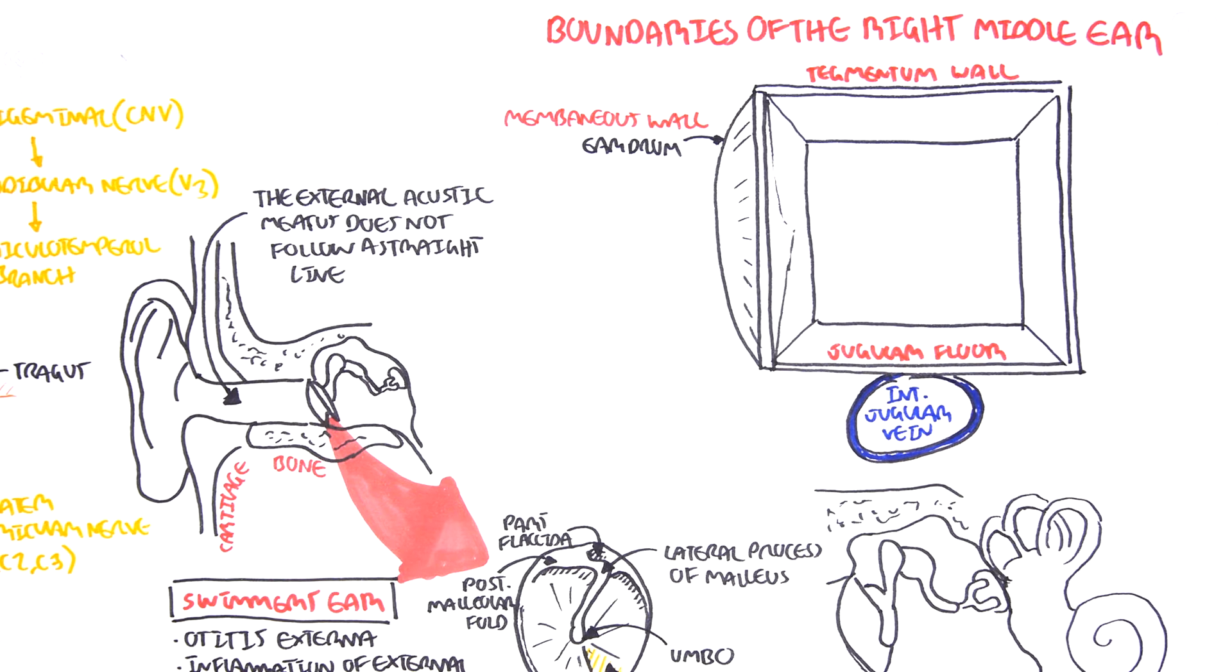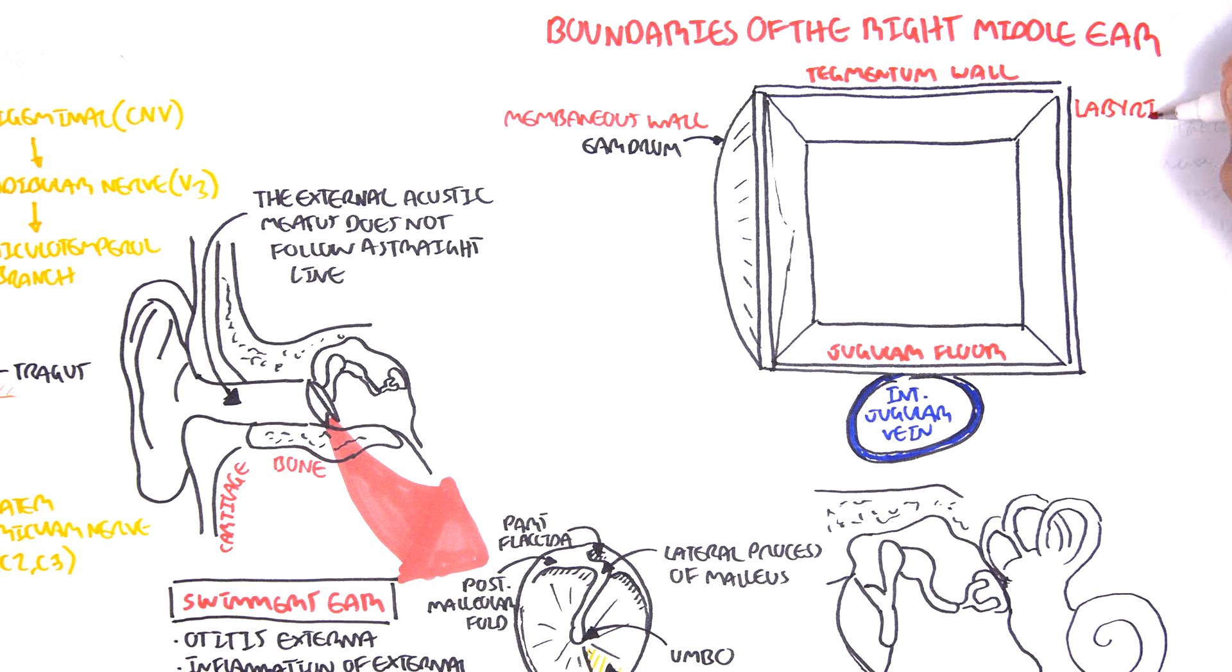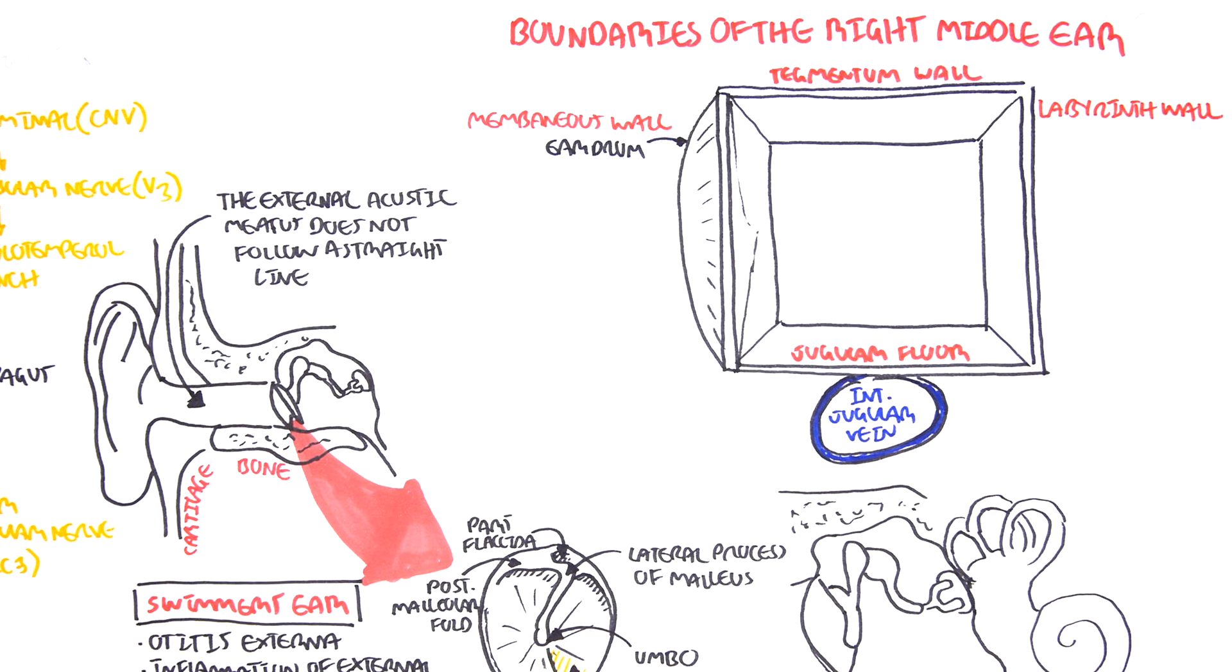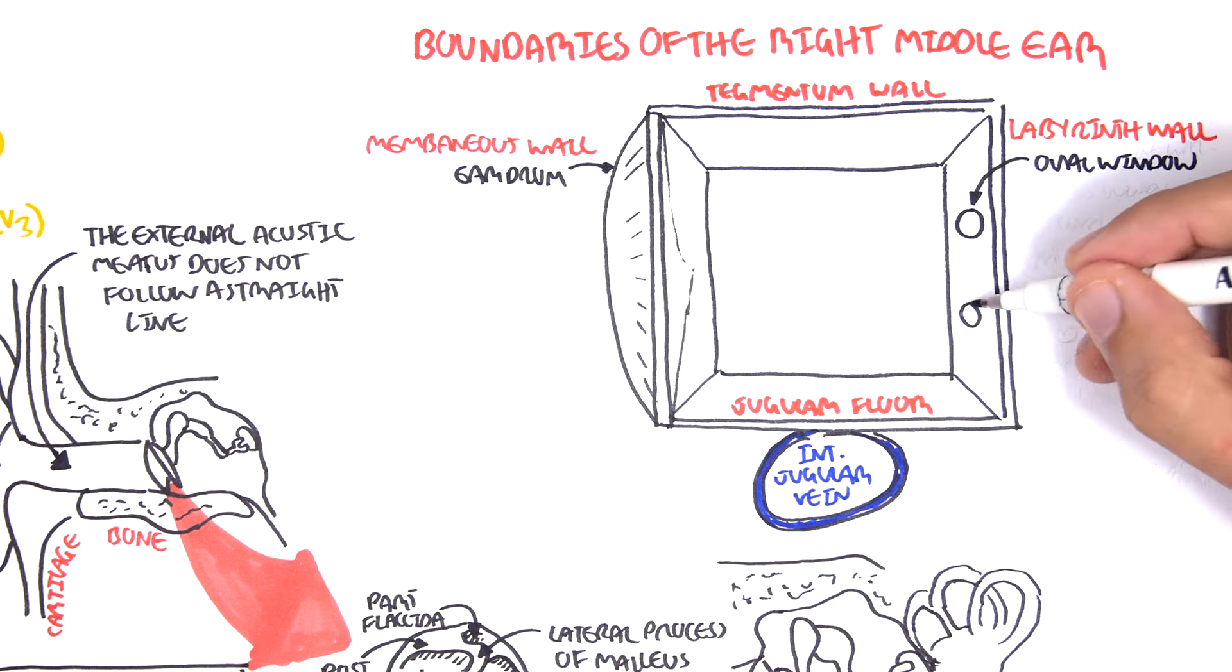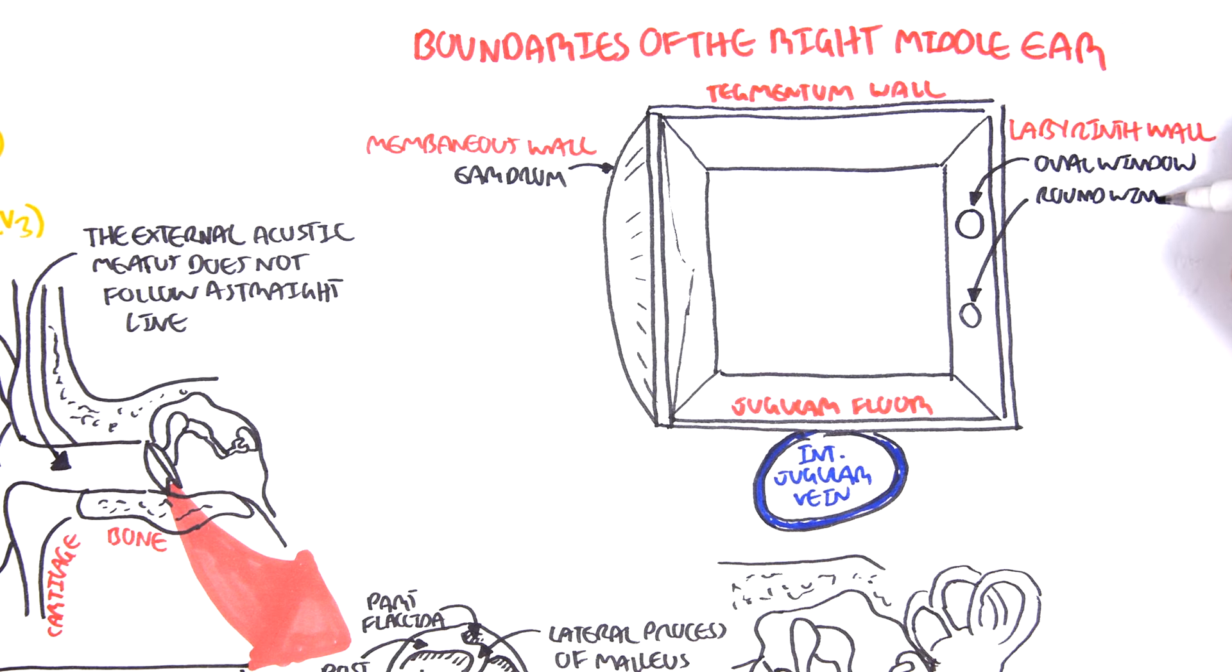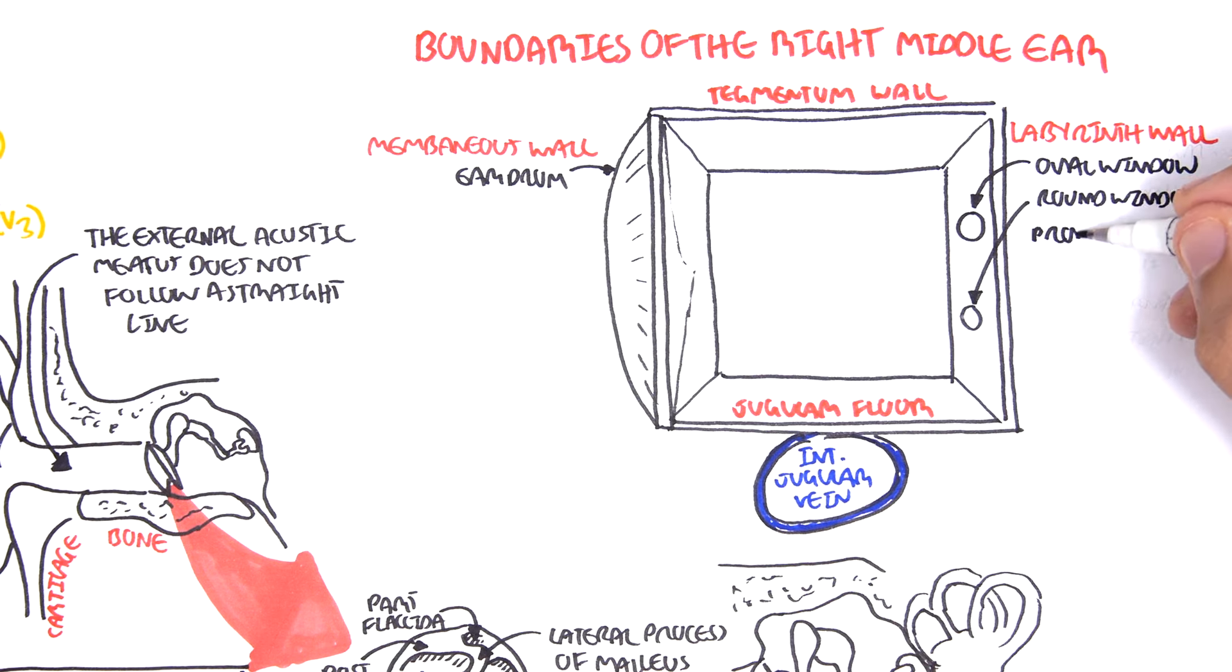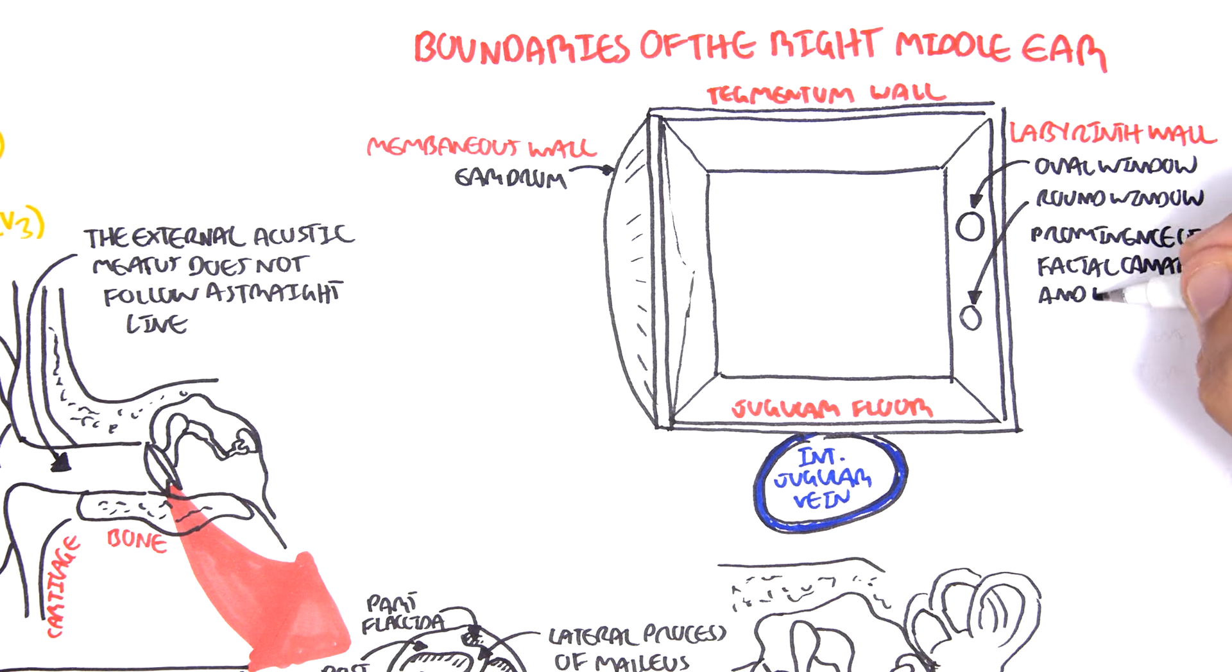The medial aspect of the wall is the labyrinth, and this is where you can find the inner ear. There are important structures that make up the labyrinth wall, and these are the oval window and the round window. Also, the prominence of the facial canal and the lateral semicircular canal can be found here.